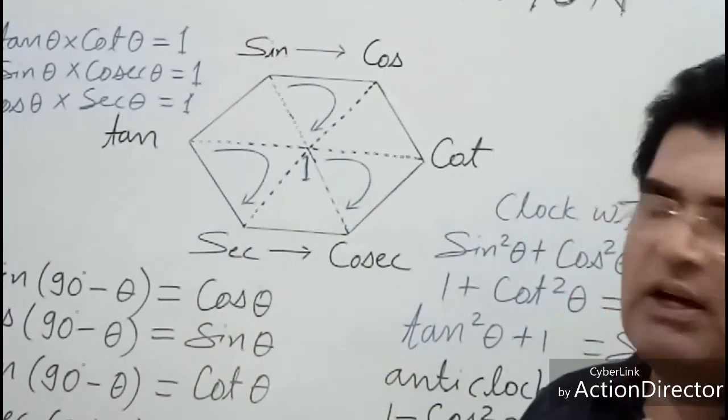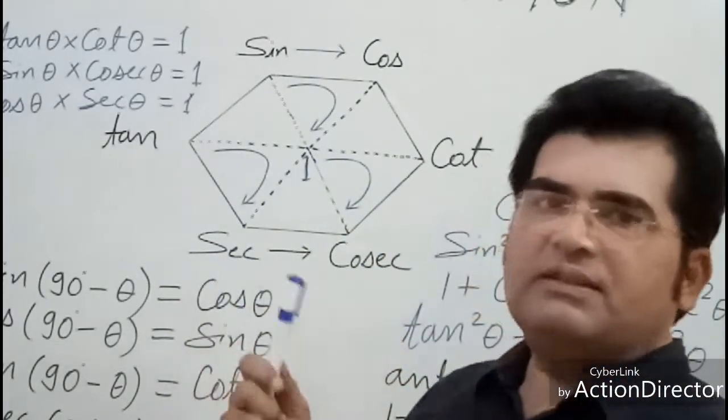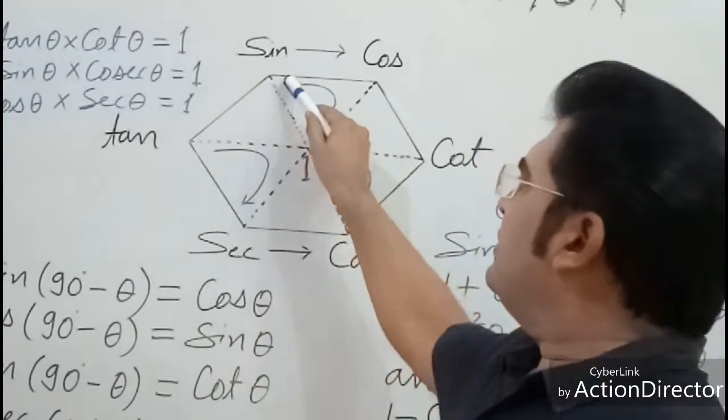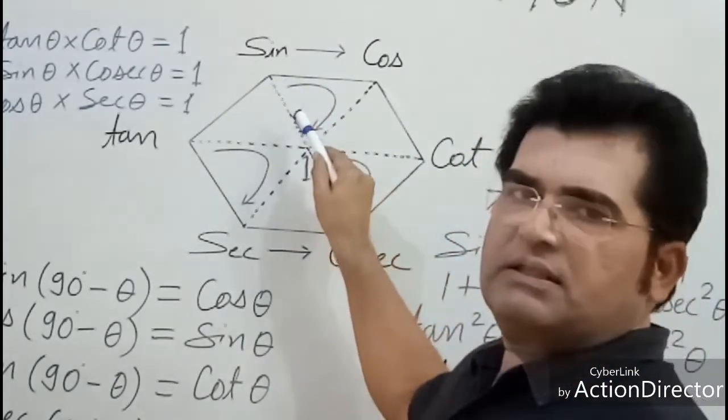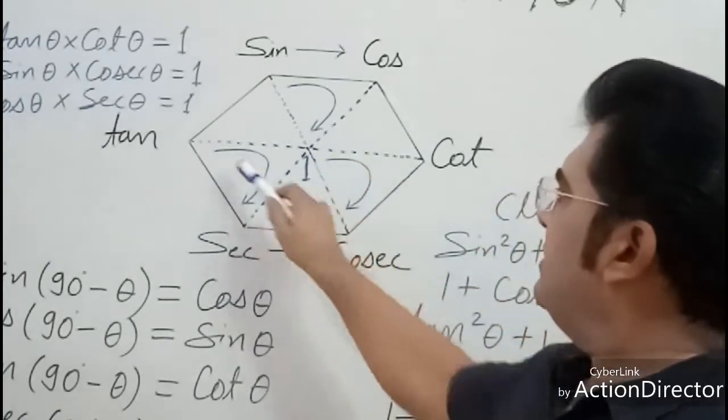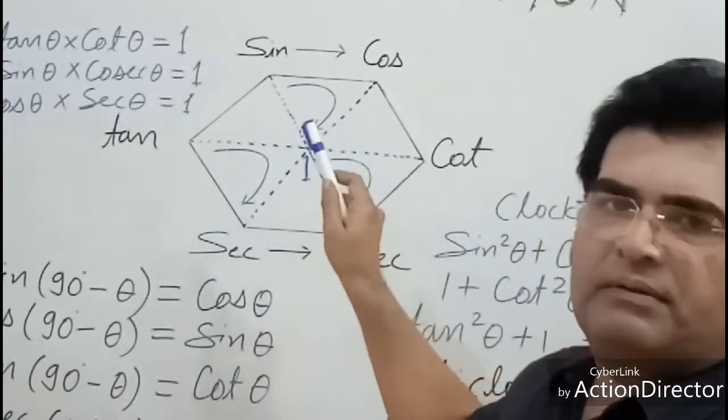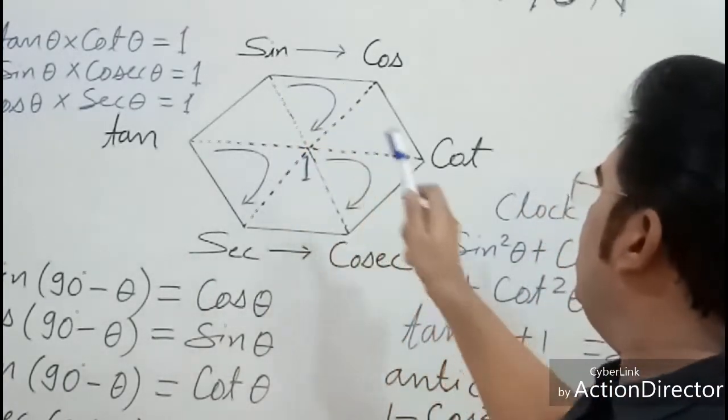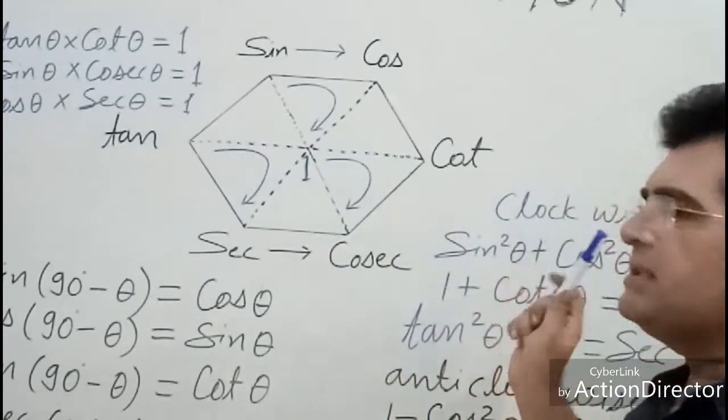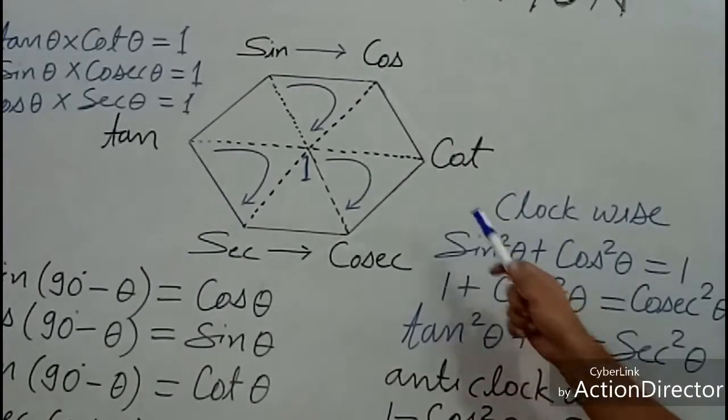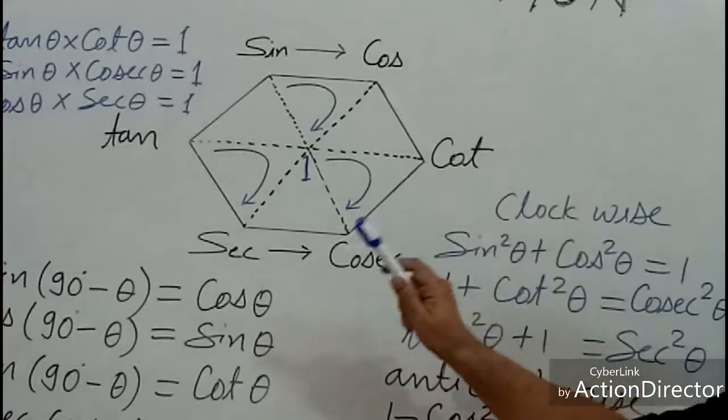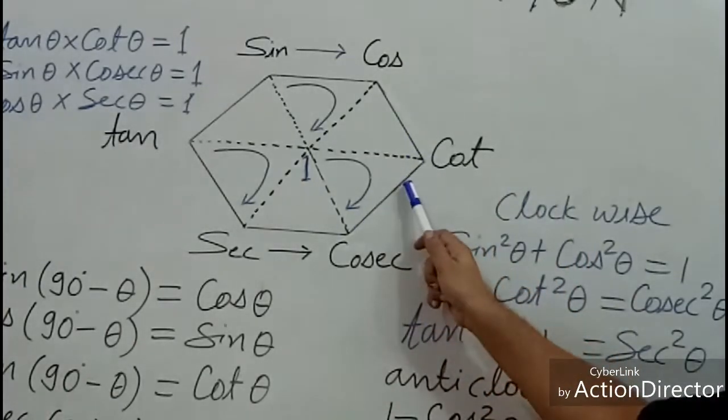Now we see other identities. You have to draw the clockwise arrow here in alternate triangles. Then you can get other identities like sine square theta plus cos square theta equals one, one plus cot square theta...